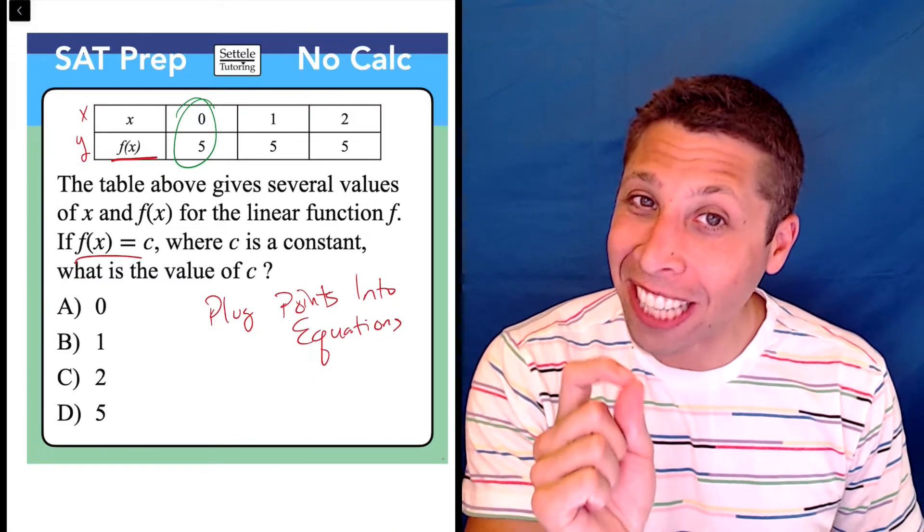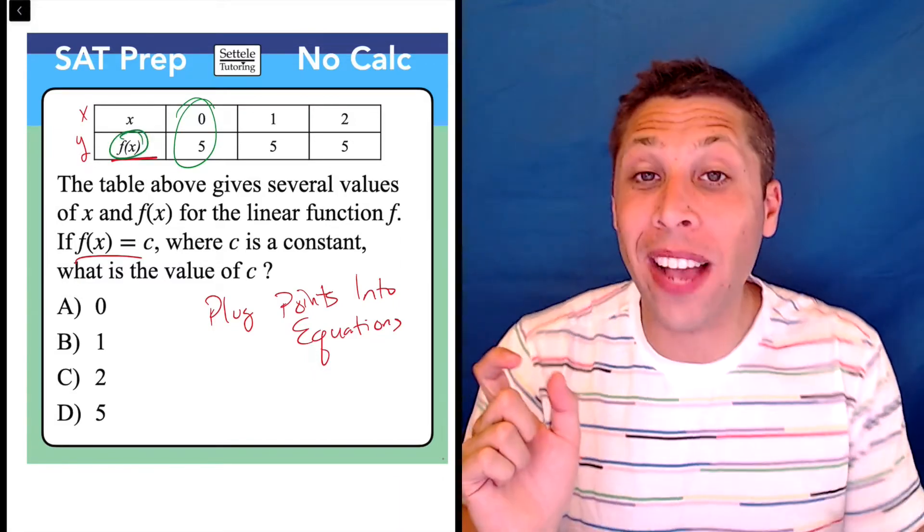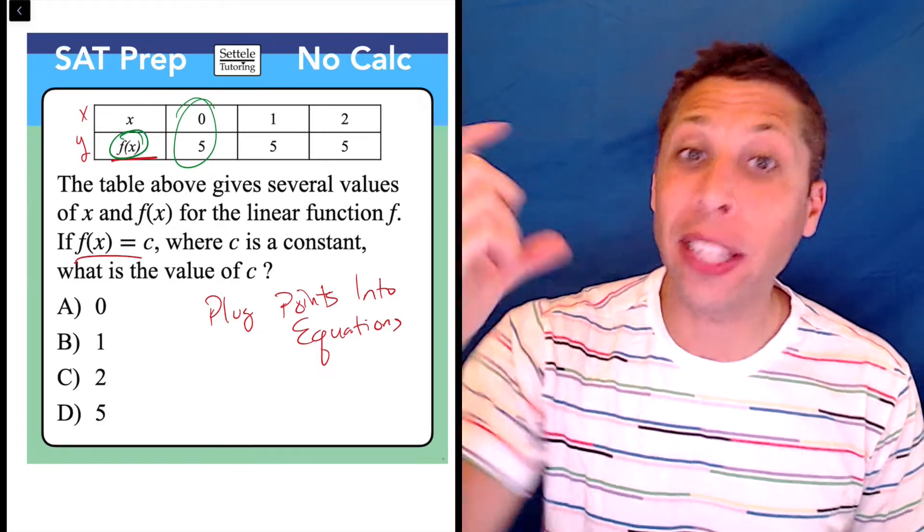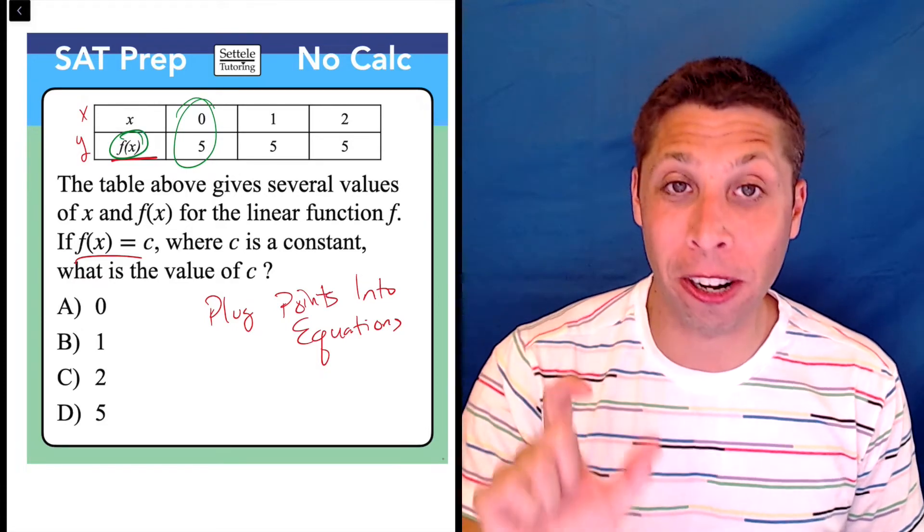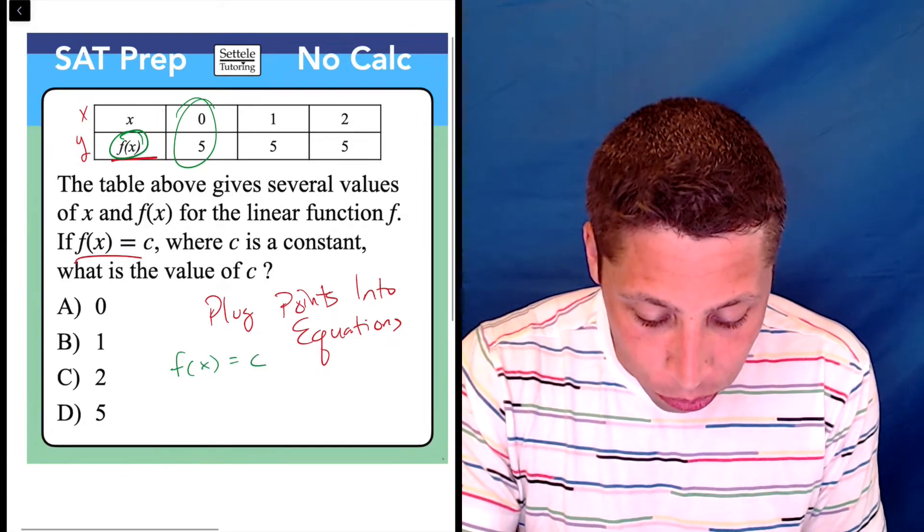And the f of x, I know there's an x there, but it's not a separate x. It's the whole f of x that we're plugging in. So it's behaving like one unit, one variable. So what ends up happening is when we plug in f of x equals c,